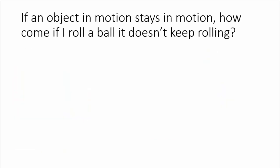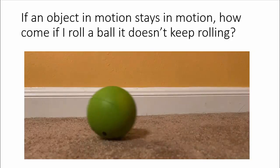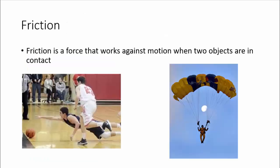Now I keep saying that, but that doesn't make sense with what we see every day. If an object in motion stays in motion, how come if I roll a ball, it doesn't keep rolling? Because it doesn't. It slows down. Well the answer to that is friction. Friction exists everywhere that we go. Friction is a force that works against motion when two objects are in contact. So whenever two things are touching and you move against them, you'll get friction.